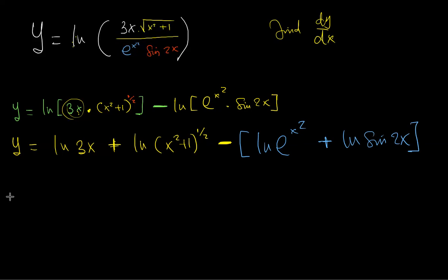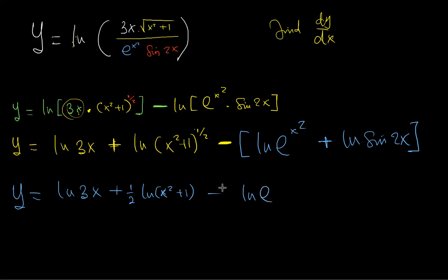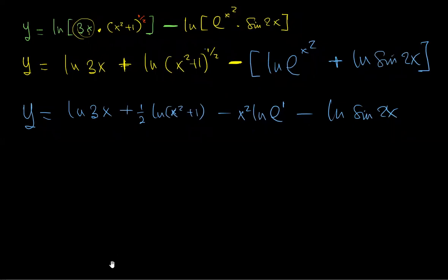Rewriting again: we have ln(3x), then we can drop the half in front, giving half·ln(x² + 1). Then minus ln(e^(x²)) — we can drop the x² exponent and this becomes just x². And ln(e) is actually 1, you can check on your calculator. Then minus ln(sin(2x)). We have not differentiated yet — what we've done is simplify.